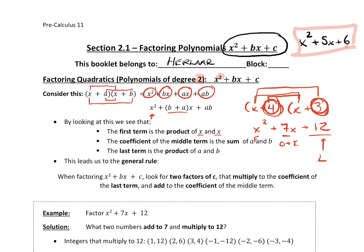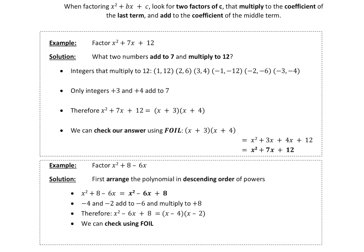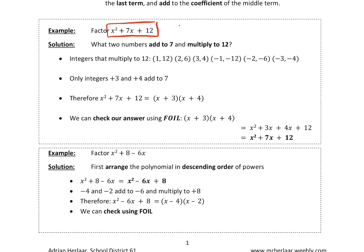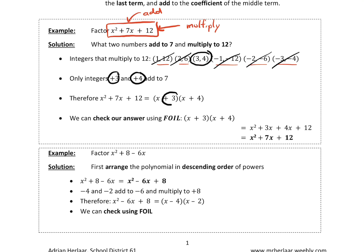So when we factor a quadratic like this, we're looking for two numbers that multiply to 12 and add to 7. When you're first doing this, list the factors: 1 times 12, 2 times 6, 3 times 4, negative 1 and negative 12, negative 2 and negative 6, negative 3 and negative 4 — all the possible factors of 12. Which of those add to 7? 1 and 12 is 13, 2 and 6 is 8. The only pair that works is 3 and 4. The sign matters — positive 3 and positive 4. So you fill in x plus 3, x plus 4, because you know it starts with x. They multiply to 12 and add to 7.